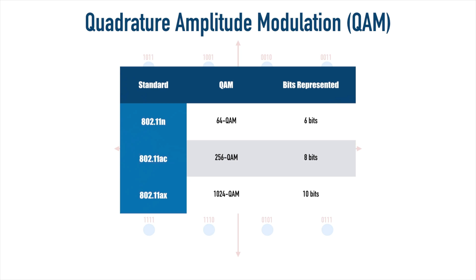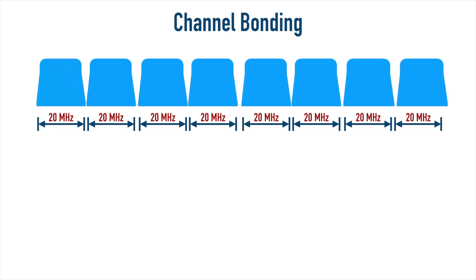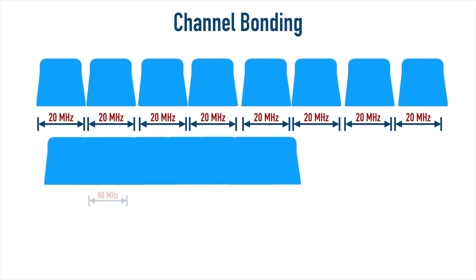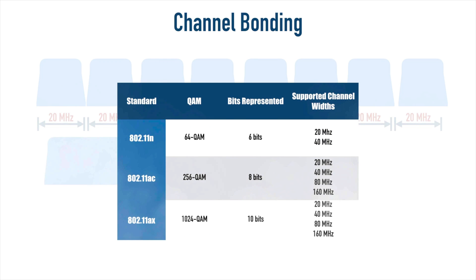We talked about having a wireless channel of 20 MHz. What we can do to give us a wider channel to send more information is combine these 20 MHz channels. We could combine a couple of them to have a 40 MHz channel — that's possible with 802.11n. With 802.11ac and 802.11ax, we can go further: we could combine four channels to give us an 80 MHz channel width, or even combine eight channels to give us a 160 MHz channel width. Yet another way that increasing channel widths gives us more speed.